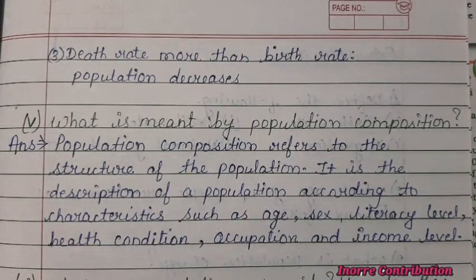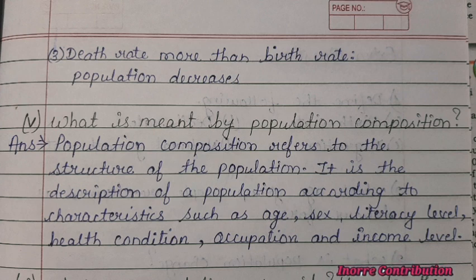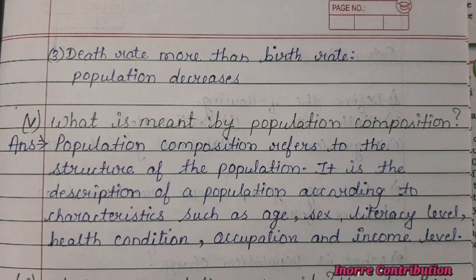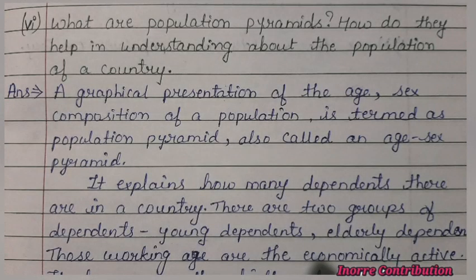Next question: what is meant by population composition? Population composition refers to the structure of the population. It is the description of a population according to characteristics such as age, sex, literacy level, health condition, occupation and income level.